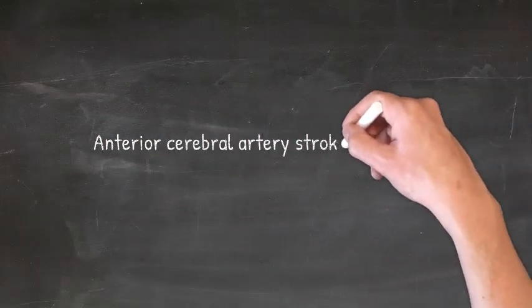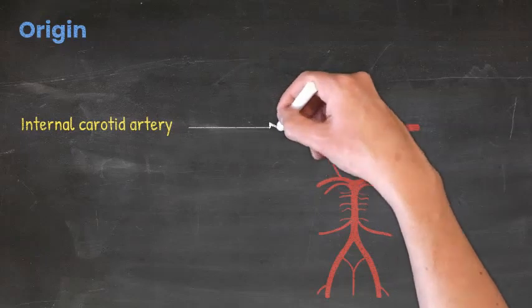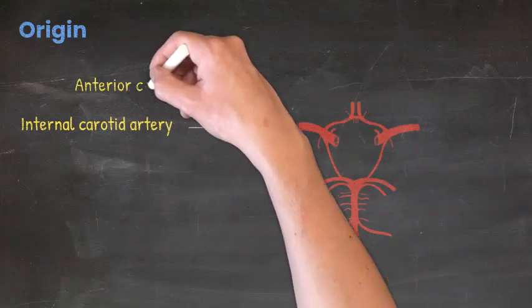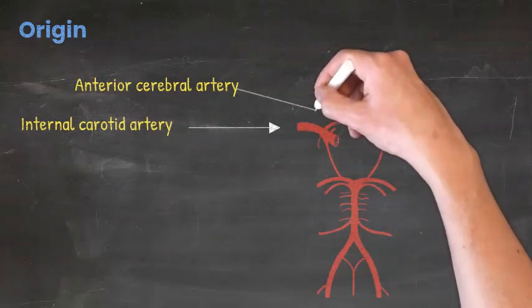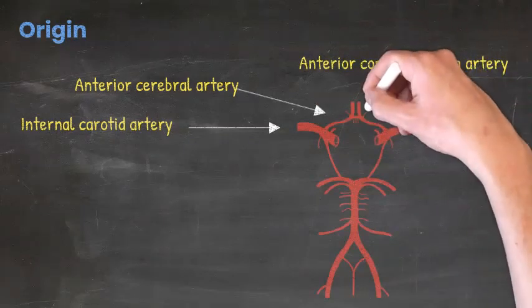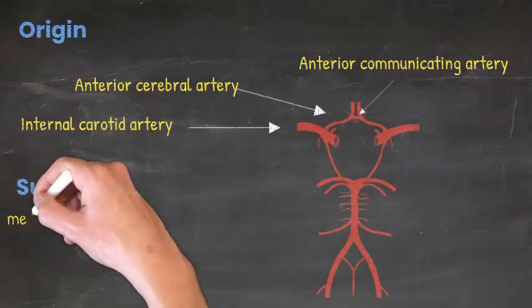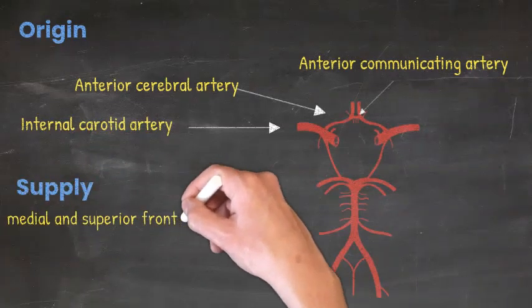In this video I shall talk about the anterior cerebral artery stroke. The anterior cerebral artery originates from the internal carotid artery and both anterior cerebral arteries are joined together through the anterior communicating artery. This artery supplies medial and superior regions.